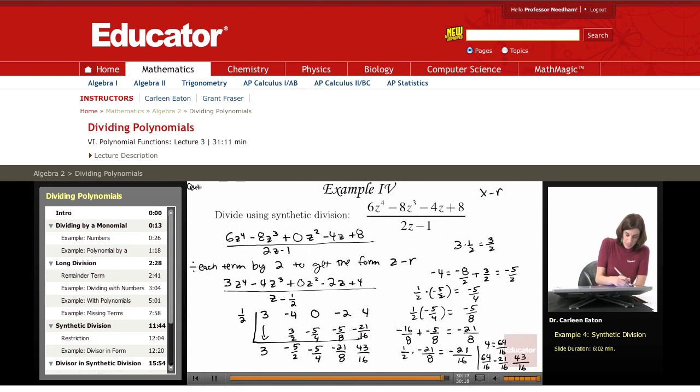So rewriting this, my quotient is going to be 3z cubed minus 5 halves z squared minus 5 fourths z minus 21 eighths, and I have a remainder of 43 sixteenths.